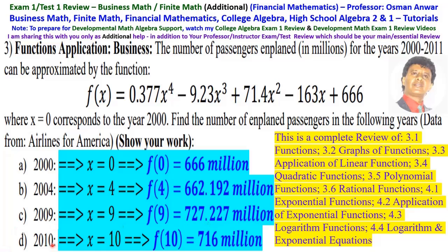D, in 2010. 2010 minus 2000 is 10. x is 10. f(10). Substitute every x by 10. Then that will give you 716 million.